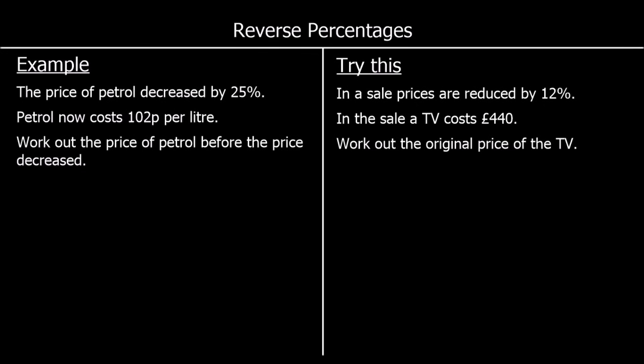OK, another example. The price of petrol decreased by 25%. Petrol now costs £1.02, 102 pence per litre. Work out the price of petrol before the price decreased. So this time, we've got a decrease. So 100% was the original, and we took off 25%, so we've got 75%.